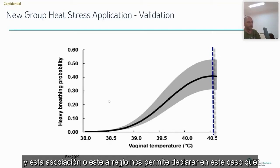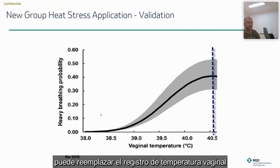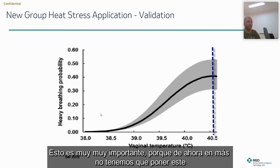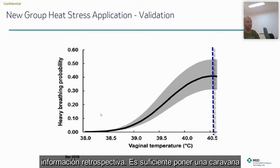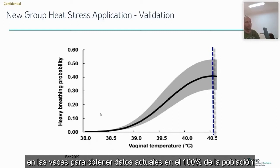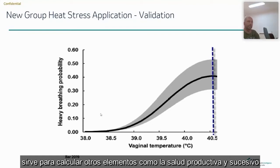This association and agreement allows us to state and declare that recording the percent of heavy breathing in a population of milking cows can replace the recording of vaginal temperature. This is very, very important because from now on we don't have to put expensive equipment in a portion of cows and get retrospective data. It is enough to put the tags on the cows to get current data from 100 percent of the covered population. This is huge, because it is actually the same data that serves us to calculate other elements such as reproduction, health, and so on.